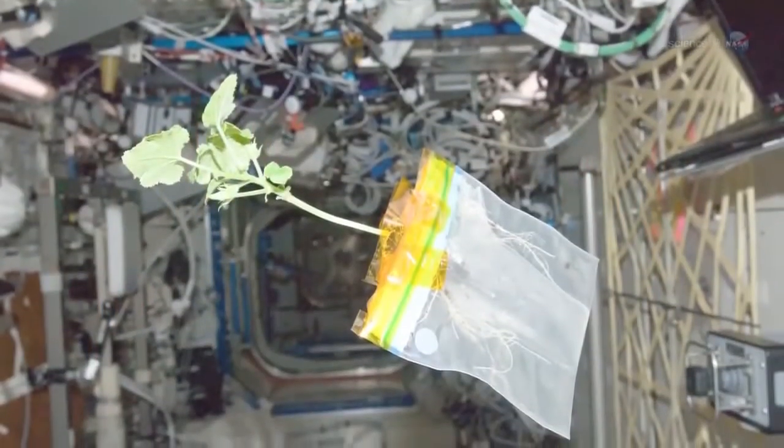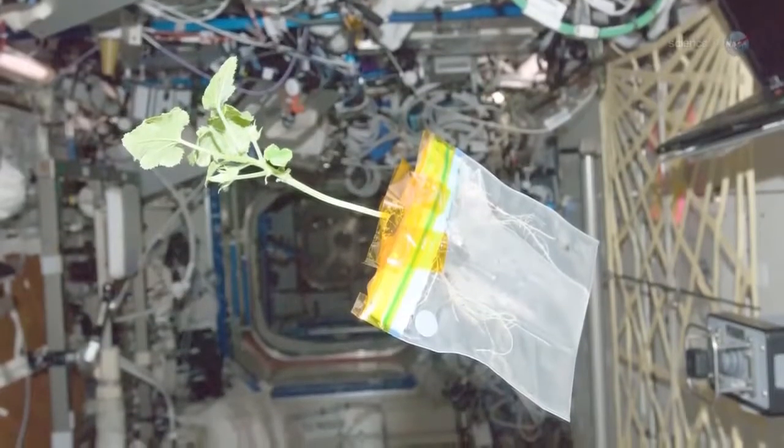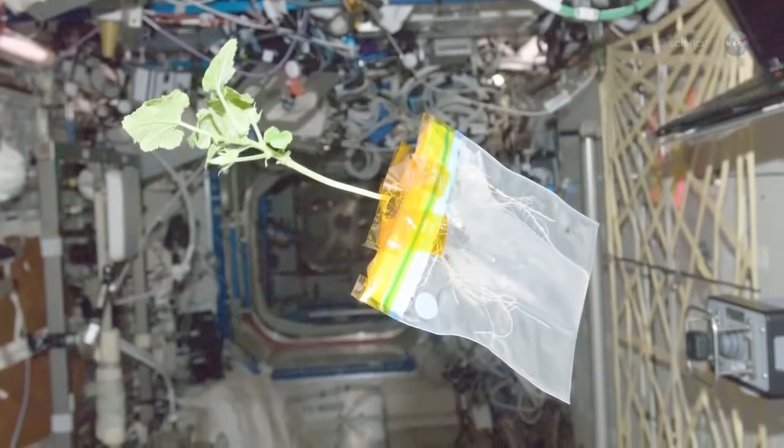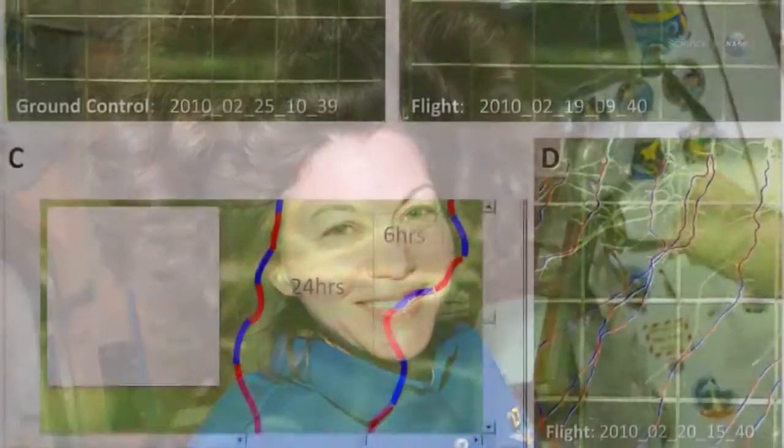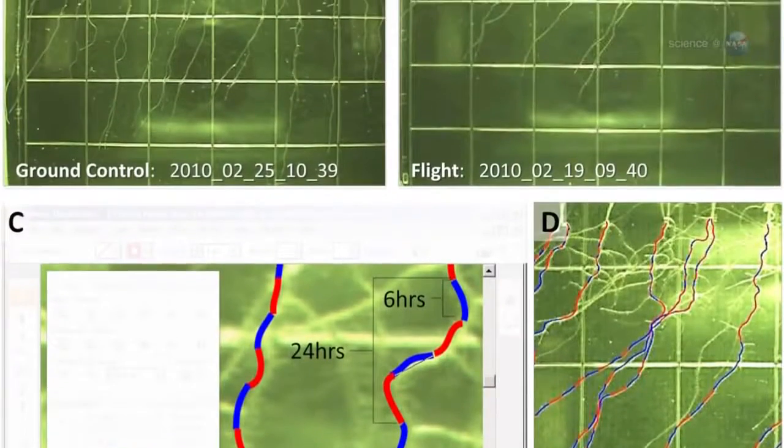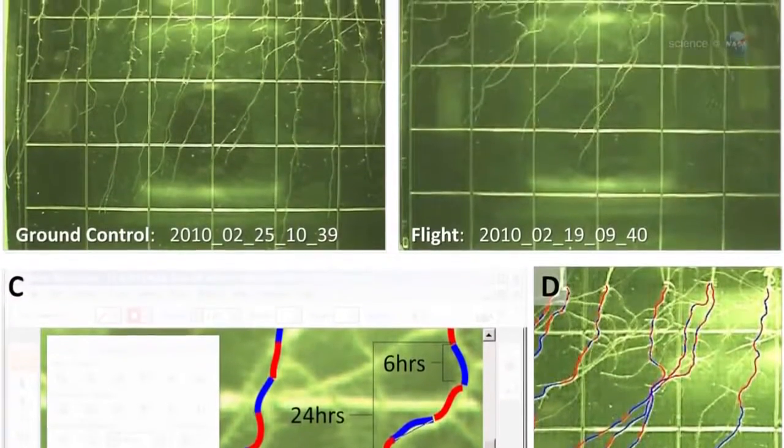Removing gravity from the equation reveals unique aspects of cell growth and development that we cannot discover in any other way, says Furl. The International Space Station is a great place to do this. In a recent issue of the journal Plant Biology, they presented some of TAGES' first results.